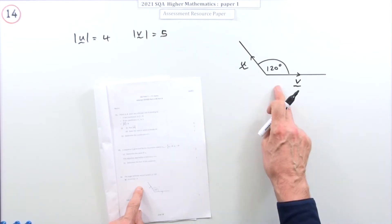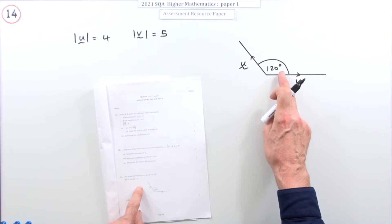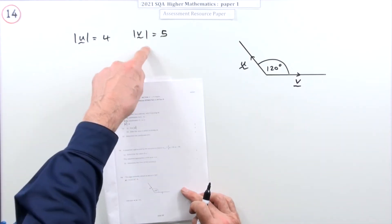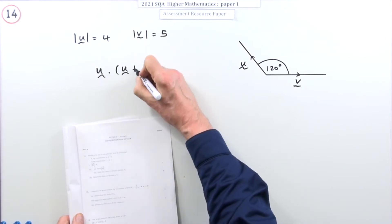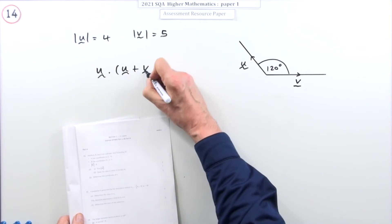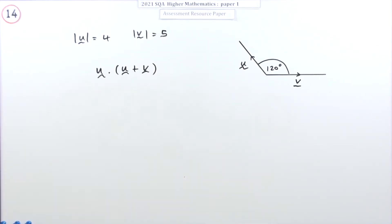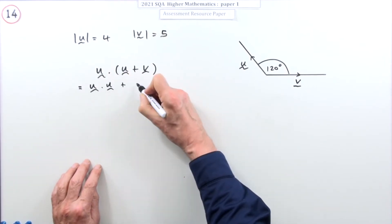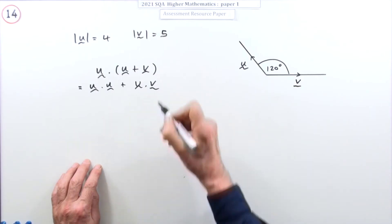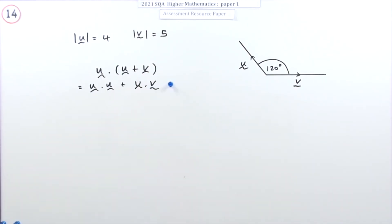You've got two vectors here acting on a common point with an angle of 120° between them. You've got the magnitude of the two vectors and you have to evaluate u dot the scalar product of u with the sum of the two of them. Now you could work out the vector that was the sum of the two of them and then do the scalar product, but you'd be better off just splitting that up using the distributive law. So it'd be u·u plus u·v, and doing that in fact gets you the first mark, knowing that you can do that, just split it up into the easier parts.